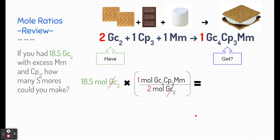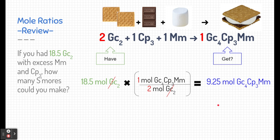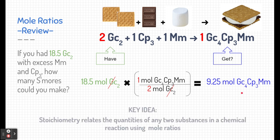If we take 18.5 moles of graham crackers and multiply it by the ratio one to two, we're going to get our answer: 9.25 moles, or 9.25 quantities of s'mores. We probably know that s'mores come in whole quantities, so we would round this down to about 9 whole s'mores. The key idea is that stoichiometry relates to the quantities of any two substances in a chemical reaction, and we can use mole ratios to do that.